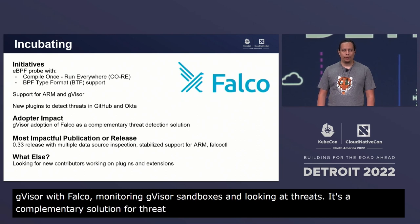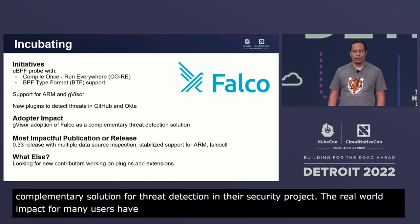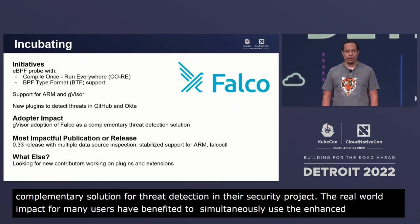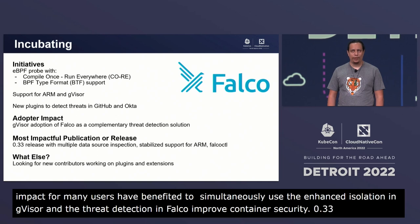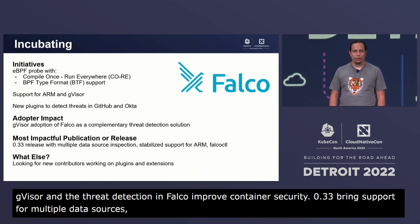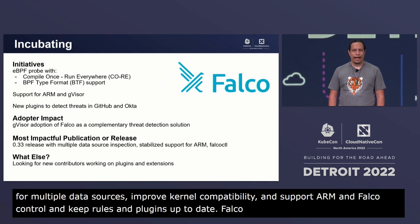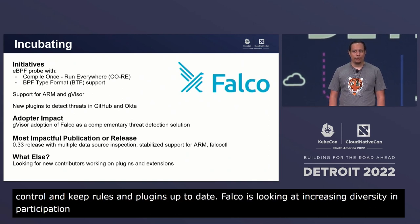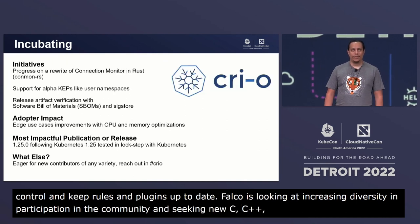Many users have benefited from this collaboration to simultaneously use the enhanced isolation in gVisor and the threat detection audits in Falco to improve container security. Version 0.33 brings support for inspecting multiple data sources simultaneously, improved kernel compatibility, stabilized support for Arm architecture, and Falcoctl — a new first-class tool to keep rules and plugins up to date. Falco is looking into increasing diversity and participation in the community and is actively seeking C, C++, and Go developers as well as non-code contributors.